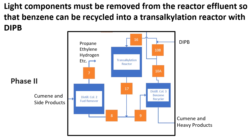Following the alkylation reaction, we enter Phase 2 of the process. Here, cumene and side products enter a fuel remover which removes light components like propane, ethylene, and hydrogen. Unreacted benzene can then be separated, recycled, combined with DIPB, and sent through a transalkylation reactor to produce even more cumene and heavy products. Additional benzene from the benzene recycler is sent back to the alkylation reactor in Phase 1 to reduce the amount of feed benzene needed to be purchased.